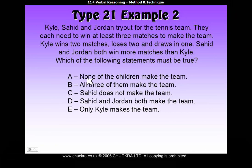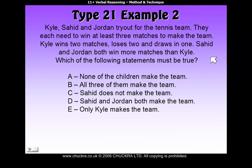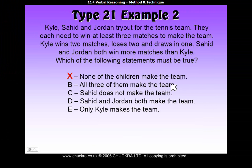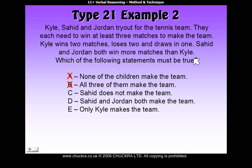Let's look at A: 'None of the children make the team.' That must be false, because Saheed and Jordan both win more matches than Kyle, who won two, so they must win three or more — which is enough to make the team. B: 'All three of them make the team.' That's false, because Kyle only wins two matches and you need three. C: 'Saheed does not make the team.' That's also false, because they both won more than Kyle, so they won more than two, meaning they make the team.